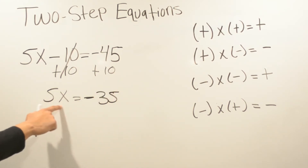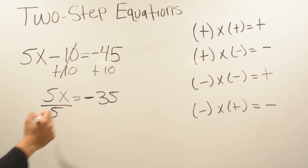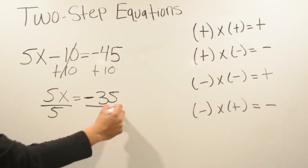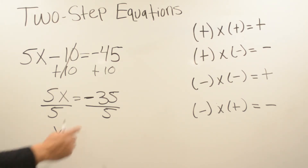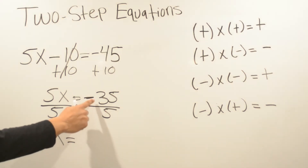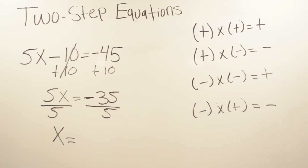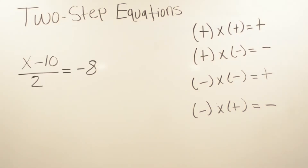Five x is multiplying, so the opposite of multiplication is division. Whatever we do on one side of the equal sign, we have to do on the other side. We divide both sides by 5, leaving the variable x by itself, which is always the goal. On the right-hand side, a negative divided by a positive gives a negative, and 5 goes into 35 seven times. So x equals negative 7.